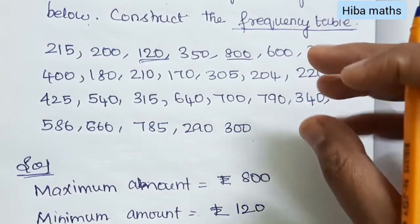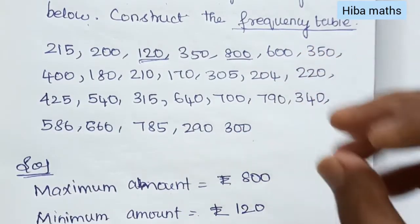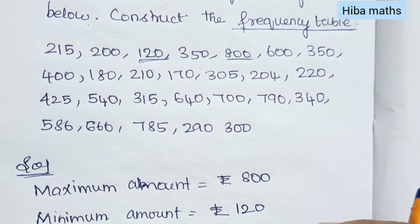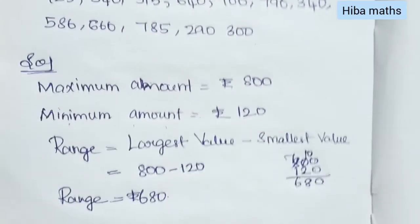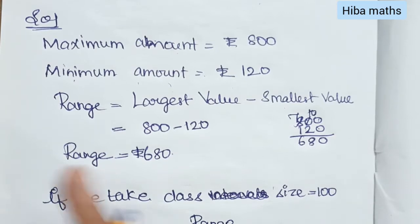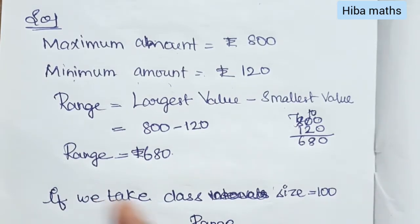Here we have to collect the data using a class size of 100. So the class intervals are: 100–200, 200–300, 300–400, and so on.